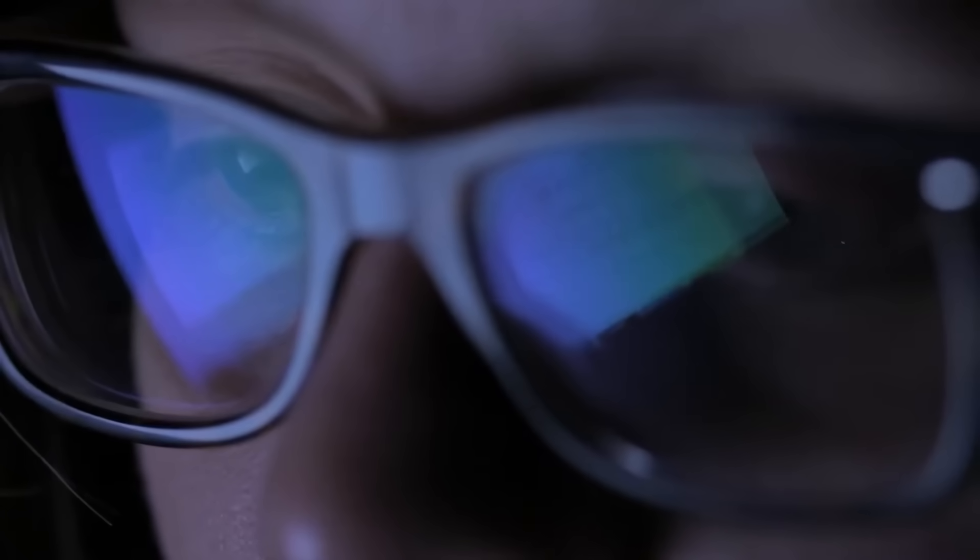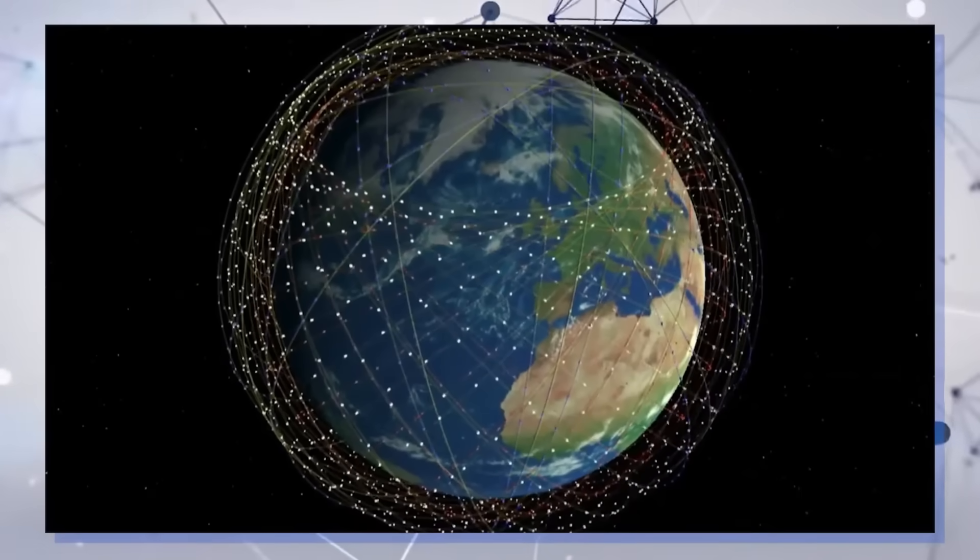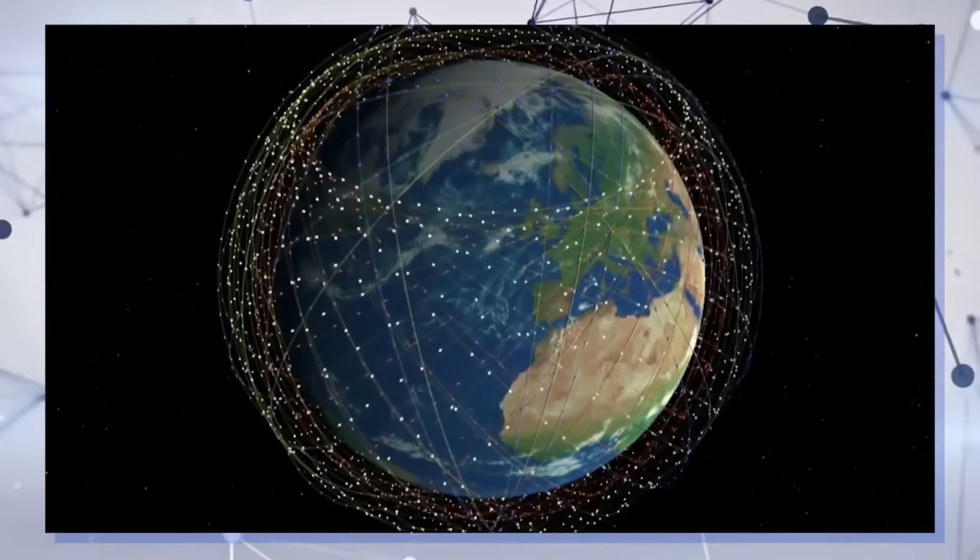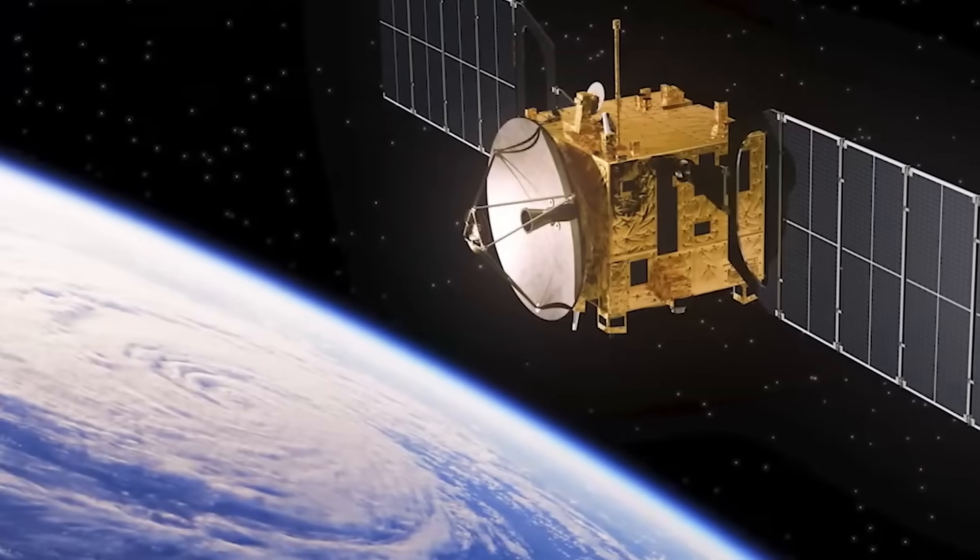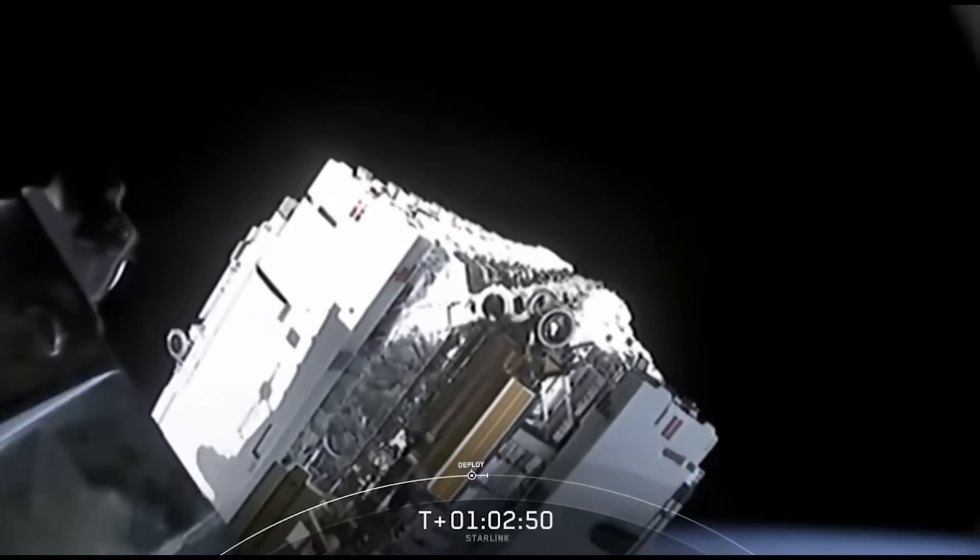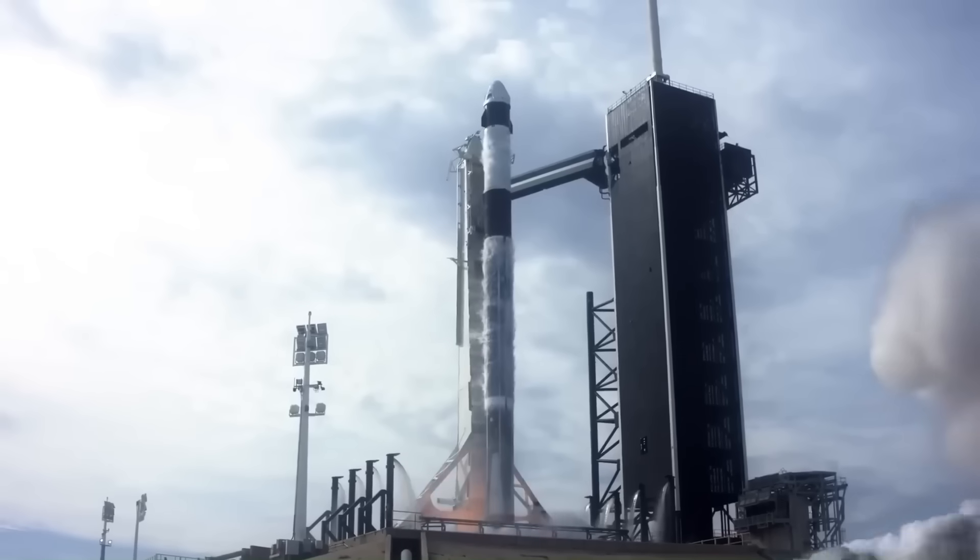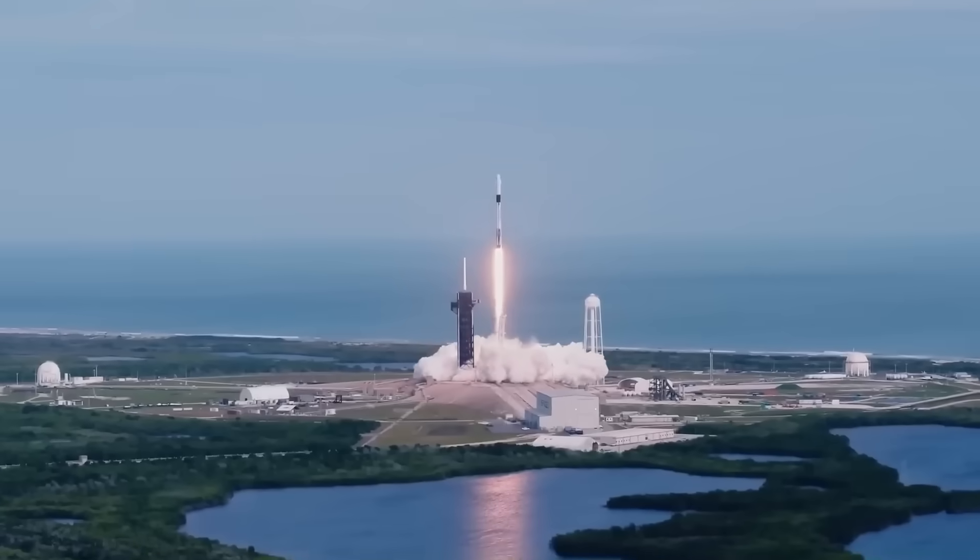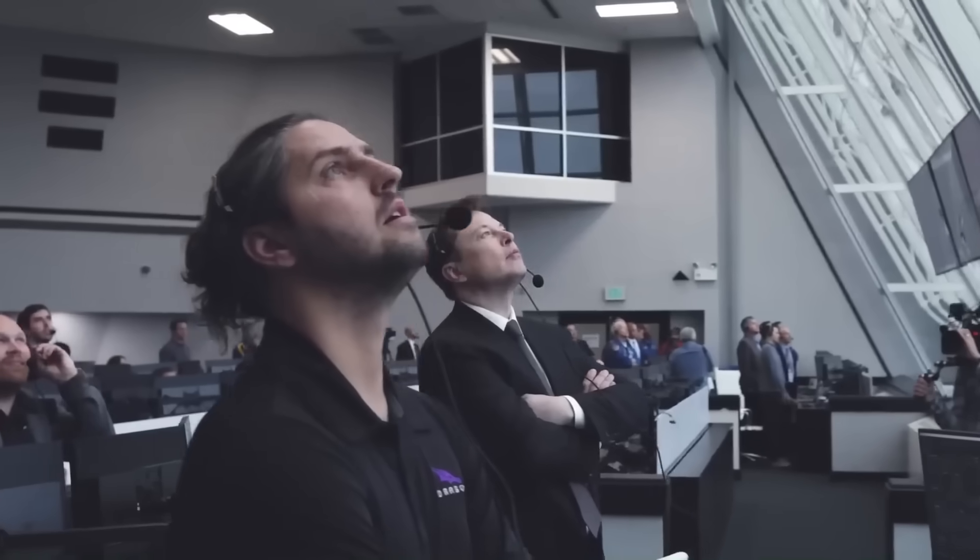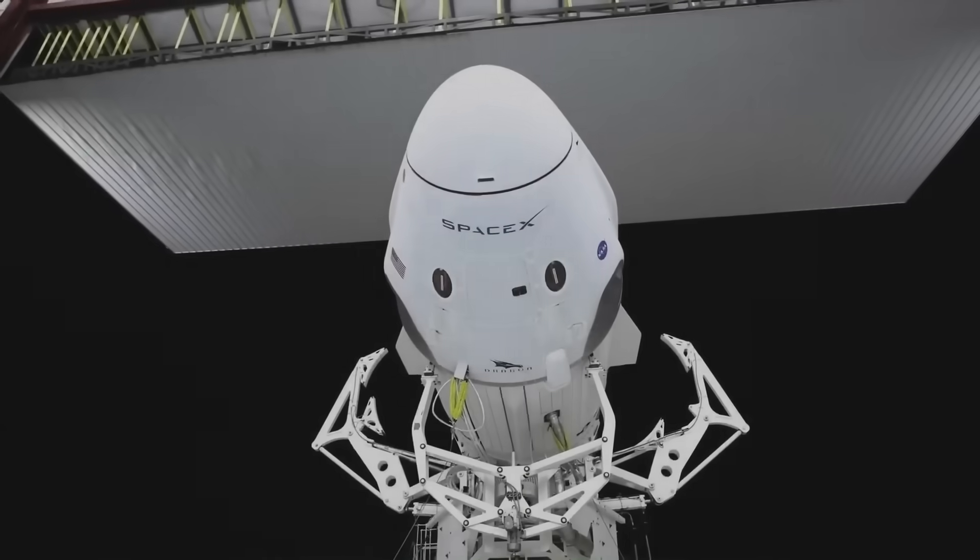SpaceX found that many of the first generation satellites had similar problems. Instead of leaving them in space where they could become useless objects, SpaceX decided to bring them down safely before they could cause problems. There is also another reason for removing older satellites. SpaceX is now launching improved satellites at a faster rate. Since early 2025, about 1,665 new Starlink satellites have been launched. These new versions offer better internet speed, more features, and improved environmental safety. So, replacing the older ones makes sense.